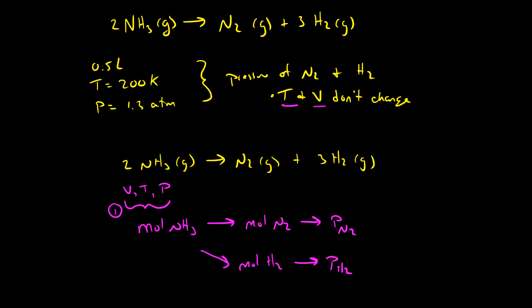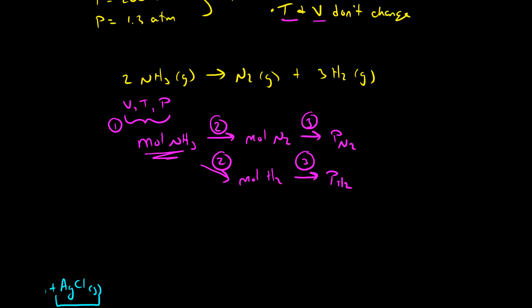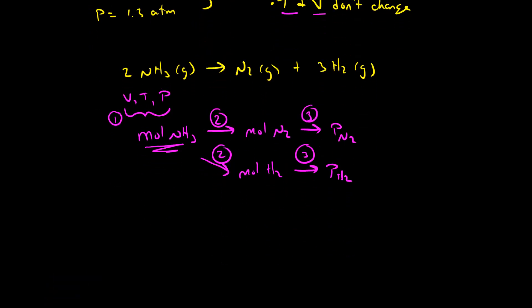This process is the same as every other stoichiometry problem we've seen. The first step is to take the information we're given and convert to moles of reactants. In the second step, we use information about the balanced chemical reaction to convert to moles of a product. In the third step, we take the moles of the product and convert that to information about a product — in this case, we want to know the pressure.